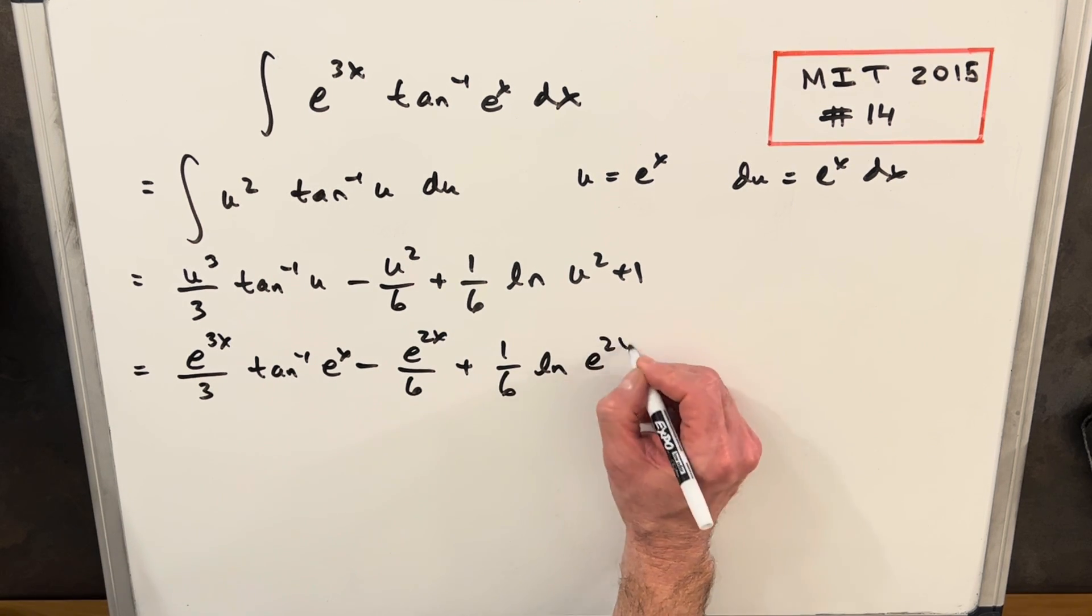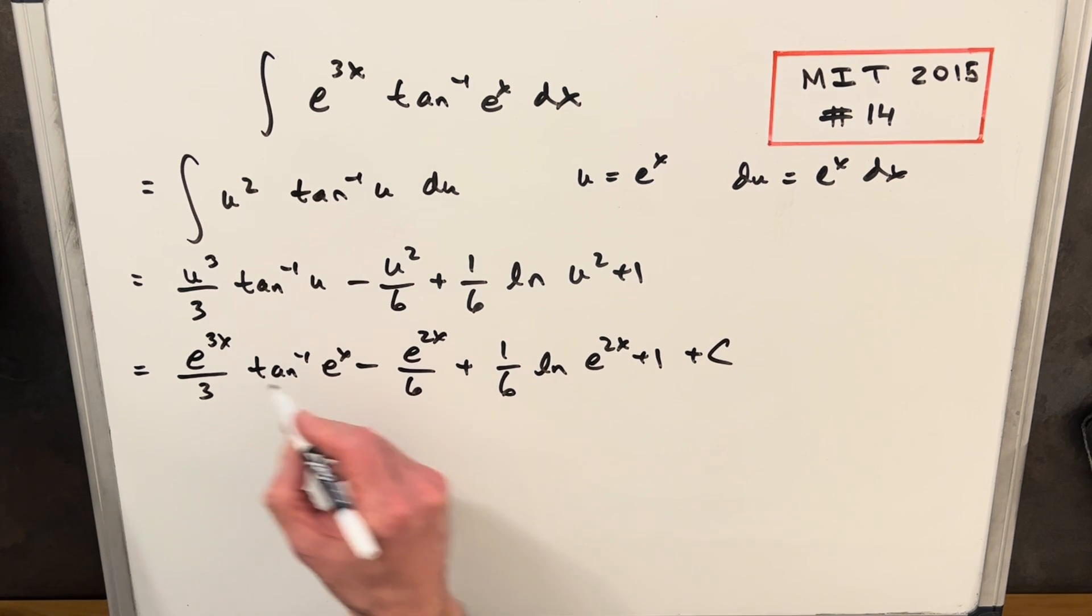Minus u squared is going to be e^(2x) over 6 plus 1 over 6 natural log, again, e^(2x) plus 1 plus c, and that's it.